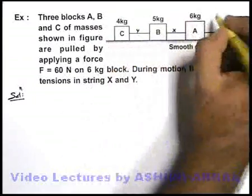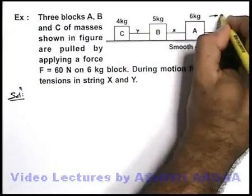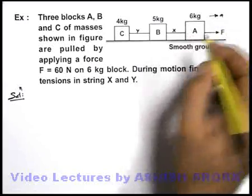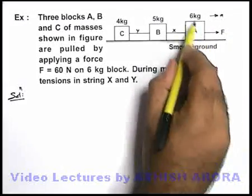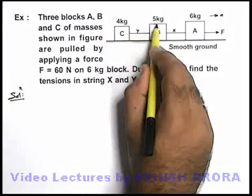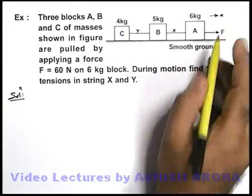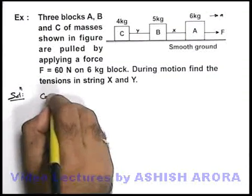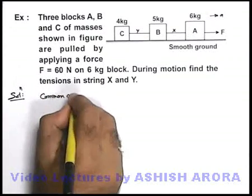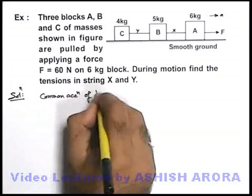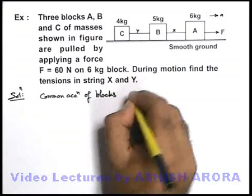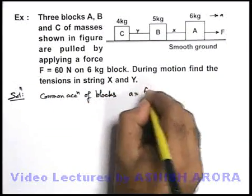We consider whole system is moving together with an acceleration A. That means we can say the force is dragging the total mass, that is 6 plus 4, 10, plus 5, 15 kilogram mass is being pulled by the force. So we can say the common acceleration of blocks, this common acceleration can be written as